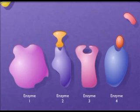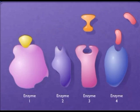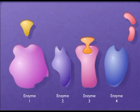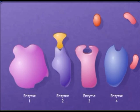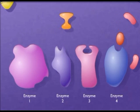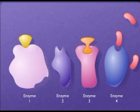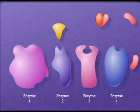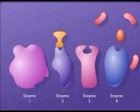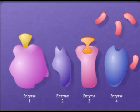If the end product of a pathway, such as an amino acid, becomes available in the environment, it is unnecessary and wasteful for the cells to continue to produce the product. Cells, therefore, have the ability to shut down a pathway when it is not needed.